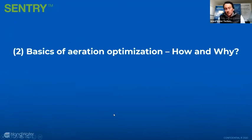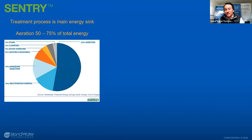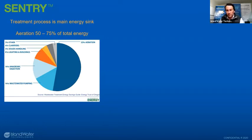Now for aeration optimization. This graph represents energy consumed by different processes at a traditional wastewater treatment plant. Aeration is the largest consumer — 53% of wastewater treatment plant energy is used for aeration, and that number can be as high as 75% of total energy. That's where a lot of the energy and operational costs go, making it the clear low-hanging fruit for optimization.